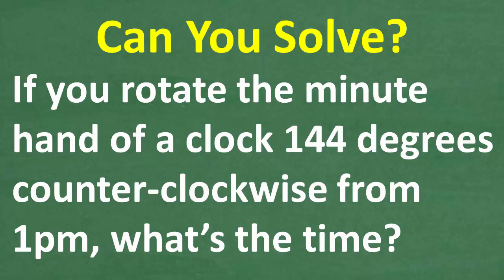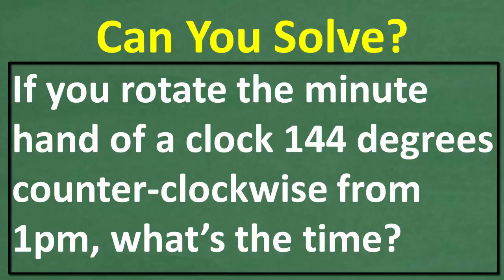Obviously you need to be able to read an old school clock, and you need to understand what counterclockwise means in order to solve this problem. But I'll explain how all this works in the solution. Let's read this problem one more time. We're going to rotate the minute hand of a clock 144 degrees counterclockwise from a starting position at 1 p.m. So we're going to end up at a new time.